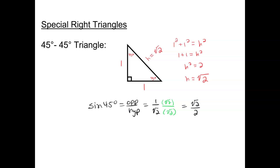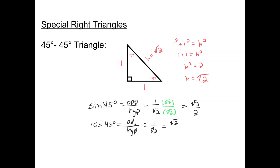If I look at the cosine of 45 degrees, that would be adjacent over hypotenuse. But look what happens — if I'm looking at that same angle, the adjacent is also 1. So I have 1 over radical 2, and 1 over radical 2 is the same as radical 2 over 2.